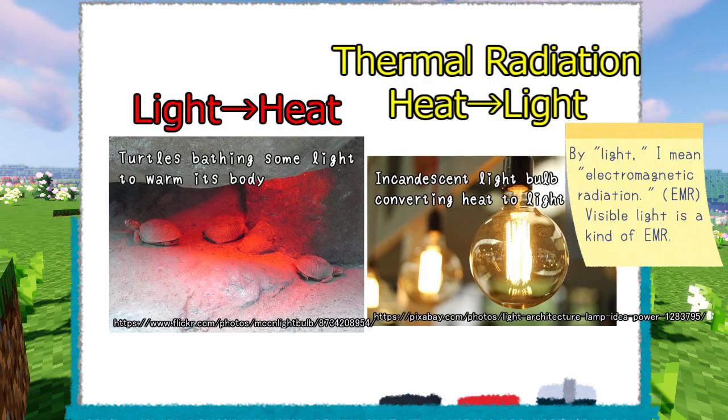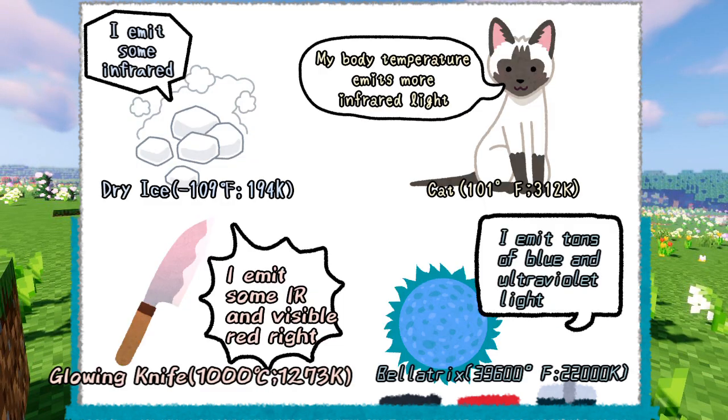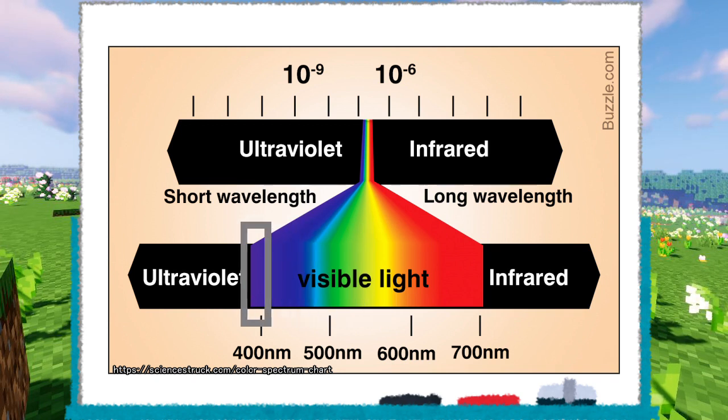This is called thermal radiation, where instead of absorbing light as heat, matter releases heat as light. Light from thermal radiation changes color and strength by temperature, so hotter matter loses heat quicker. The color of light from thermal radiation changes from red to blue as temperature rises.